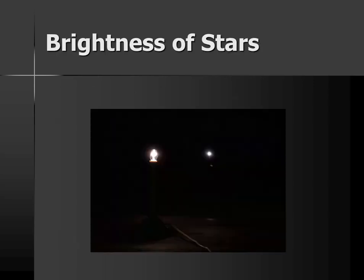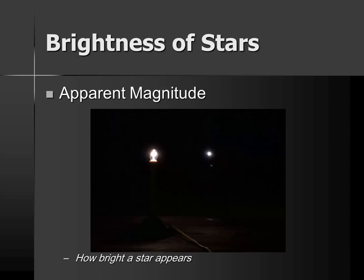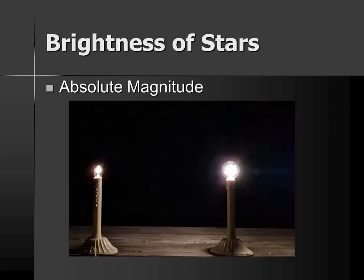Starting by talking about the brightness of a star. Here we can see a simple experiment with two light bulbs. Clearly, the one on the left is considerably brighter. We talk about apparent magnitude — this is how bright a star, or in this case a light, will appear. On the other hand, that may not be a true representation, which is why we also need to discuss absolute magnitude.